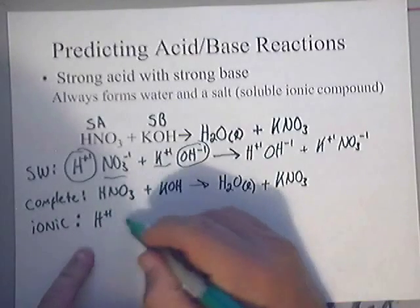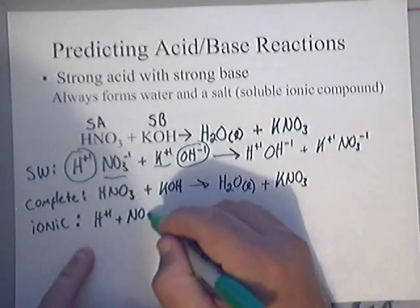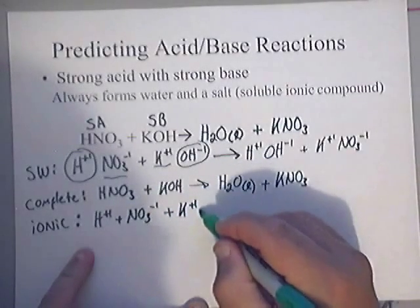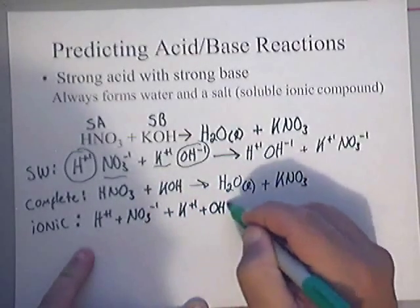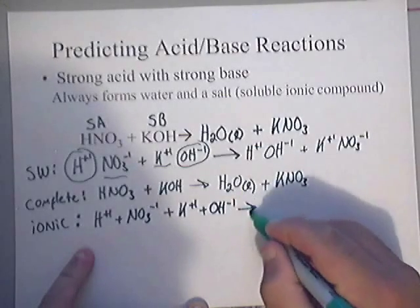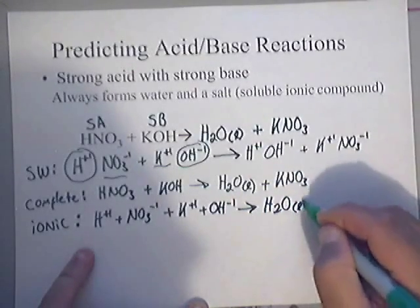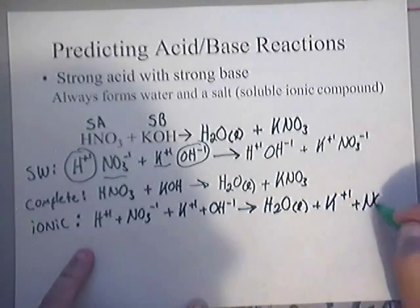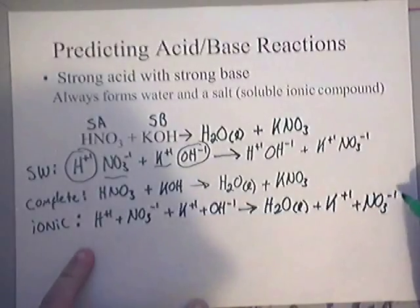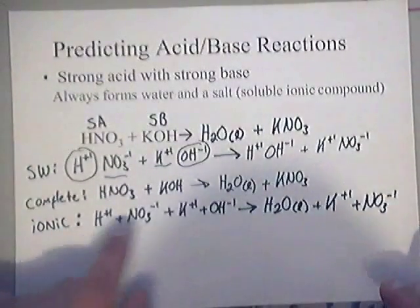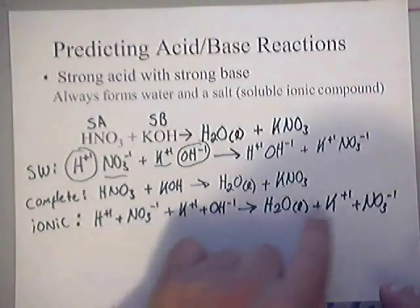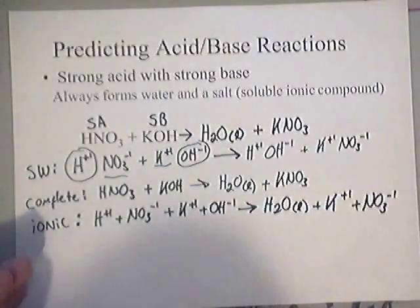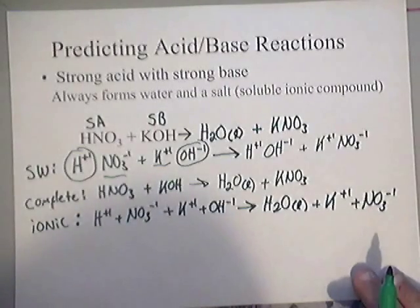This is going to be H plus one, plus NO3 negative one, plus K plus one, plus OH negative one, yields this water, H2O liquid, plus K plus one, plus NO3 negative one. Just remember, on all these, if you've got a picky professor, a teacher, the ones that are ions, make sure you put AQ after it. I don't require my students to, just because it takes up so much room. So there's the ionic.